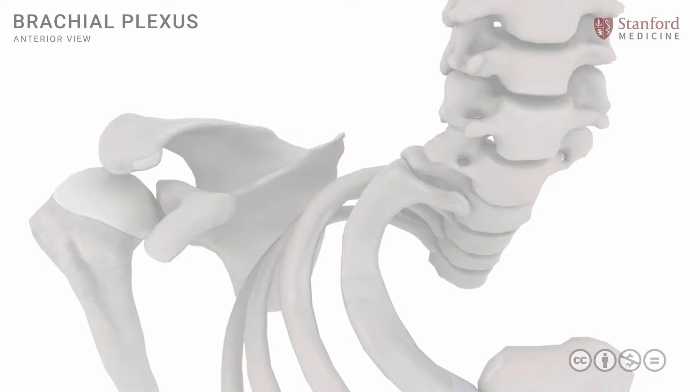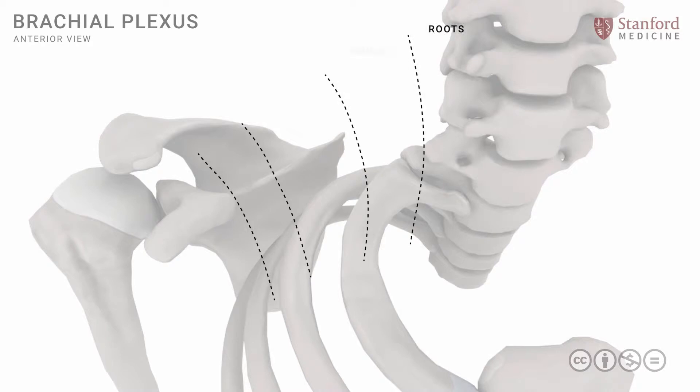The brachial plexus itself can be best understood as a tree, and it has various sections. These include roots, then trunks, divisions, and finally cords, and the cords give out most of the branches. There are some branches that emanate from the trunks and the roots, but for all practical purposes, they come primarily from the cords.